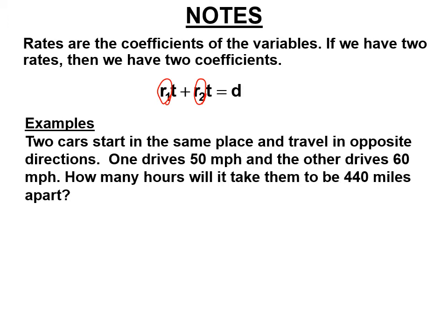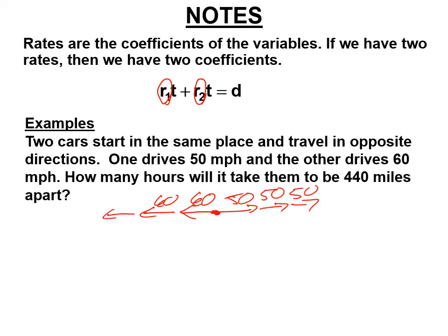Let's see that in this first problem. Two cars start in the same place and travel in opposite directions, just like the picture you saw on the last screen. One drives 50 miles per hour and the other drives 60 miles per hour. Every hour they're getting farther and farther apart — after one hour they're 110 miles apart, and three hours they're even farther apart.